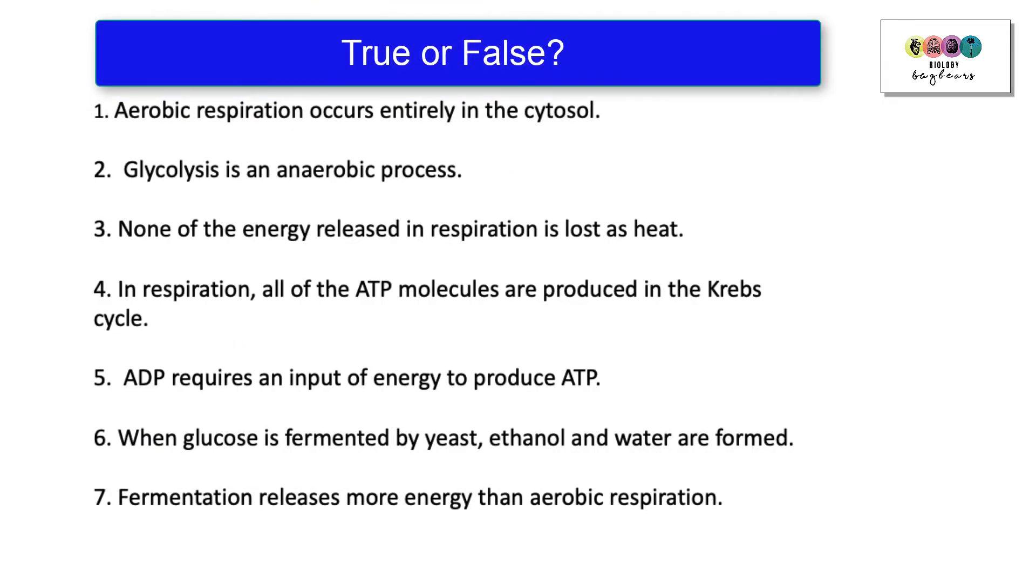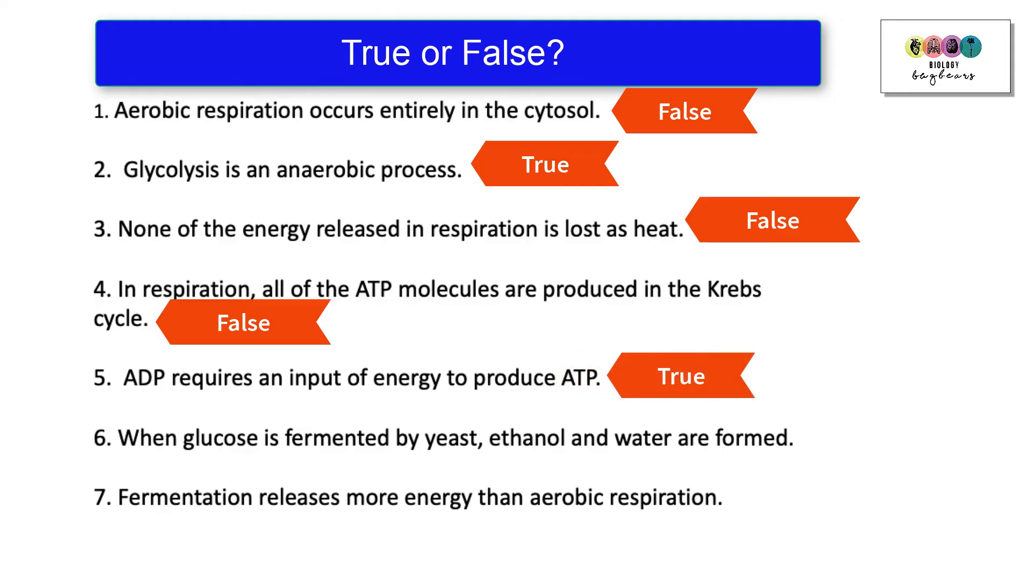Let's go through these true or false questions. Aerobic respiration occurs entirely in the cytosol? That's false. The second stage takes place in the mitochondria. Glycolysis is an anaerobic process? That's true. There's no oxygen involved in glycolysis at all. None of the energy released in respiration is lost as heat? That's false. We know that some of the energy is lost as heat. In respiration, all of the ATP molecules are produced in Krebs cycle? That's false. ADP requires an input of energy to produce ATP? That's true. When glucose is fermented by yeast, ethanol and water are formed? That's false. Fermentation releases more energy than aerobic respiration? That's false.